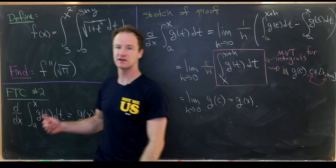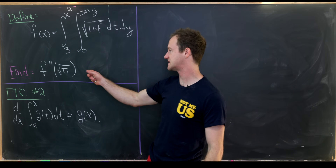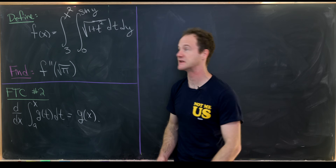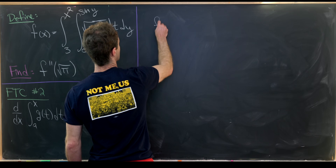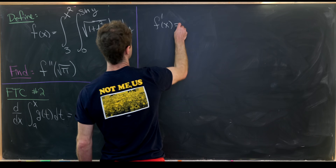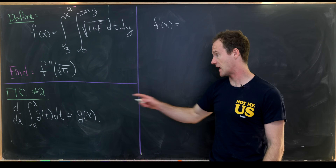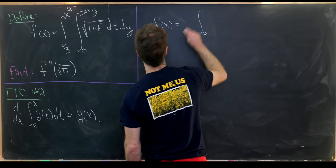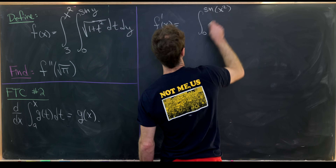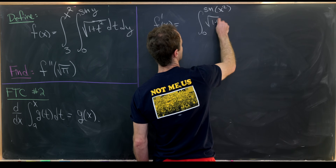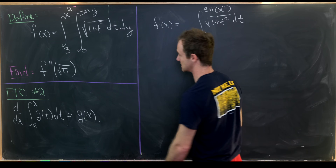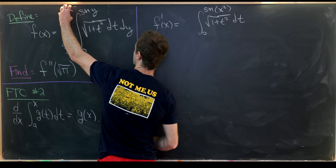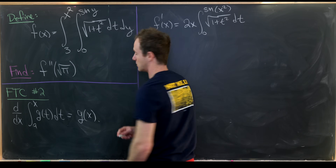Now that we've got FTC Part 2 established, let's go to our main problem. Our goal is to find the second derivative evaluated at the square root of pi of our function. We probably want to take the first derivative first. Applying FTC Part 2, the derivative with respect to x equals the integral from 0 to sine of x squared of the square root of 1 plus t squared dt, but we also have to multiply by the derivative of the inside function — so that's multiplied by 2x.